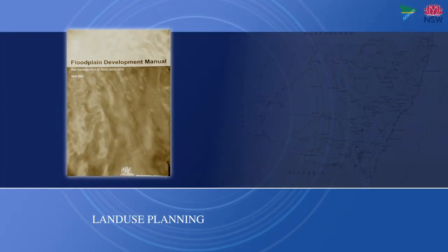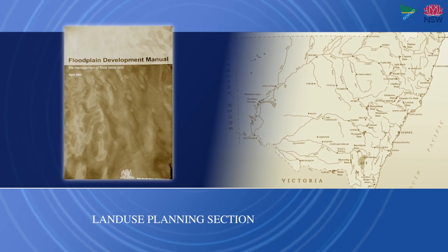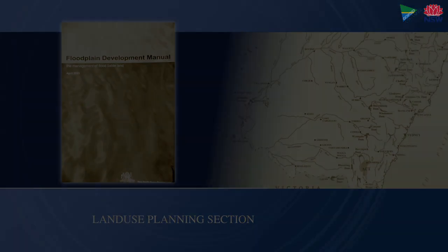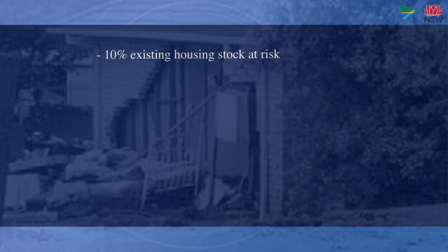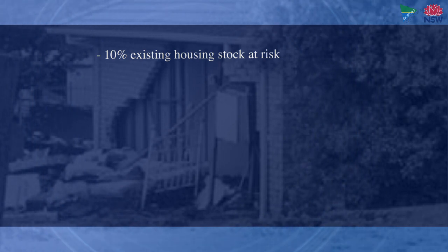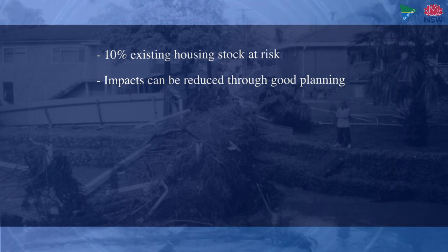The annual average cost in Australia for flood damage is estimated to be more than $400 million per year. Approximately 10% of Australia's existing housing stock is at risk from various types of flooding. It's not possible to eliminate all flood risk. However, the impacts on communities can be reduced through good land use planning.